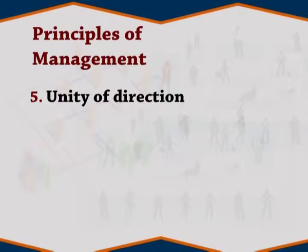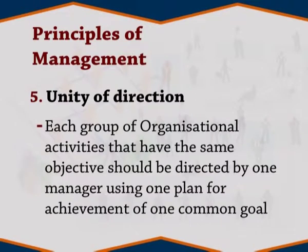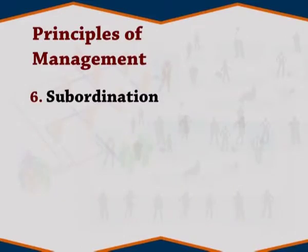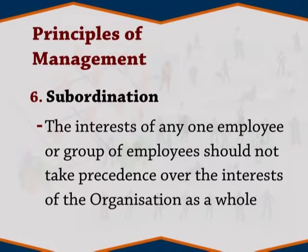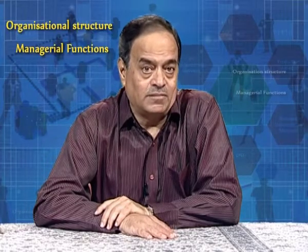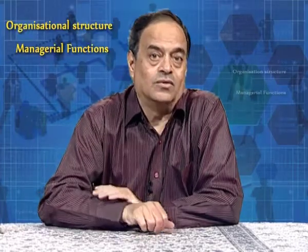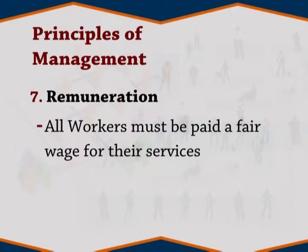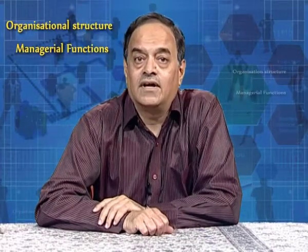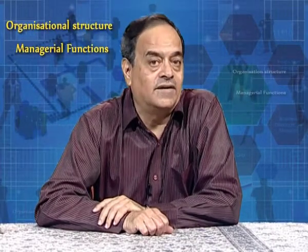Five: unity of direction. Each group of organizational activities that have the same objective should be directed by one manager using one plan for achievement of one common goal. Six: subordination. The interest of any one employee or group of employees should not take precedence over the interest of the organization as a whole. Employees' effort should be in line with the organization's goal. Seven: remuneration. All workers must be paid a fair wage for their services. Otherwise, they get demoralized or demotivated, and it affects the productivity.